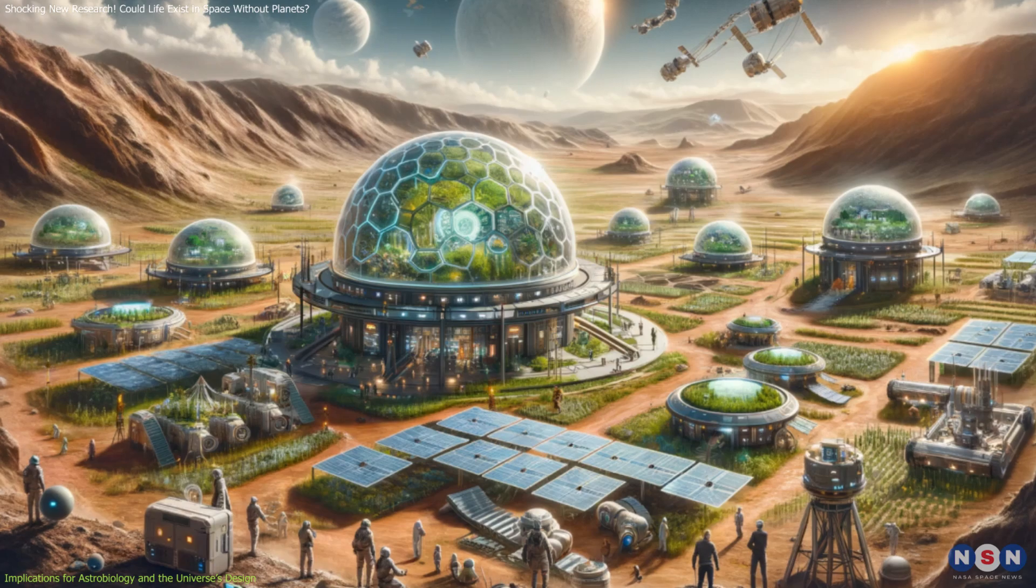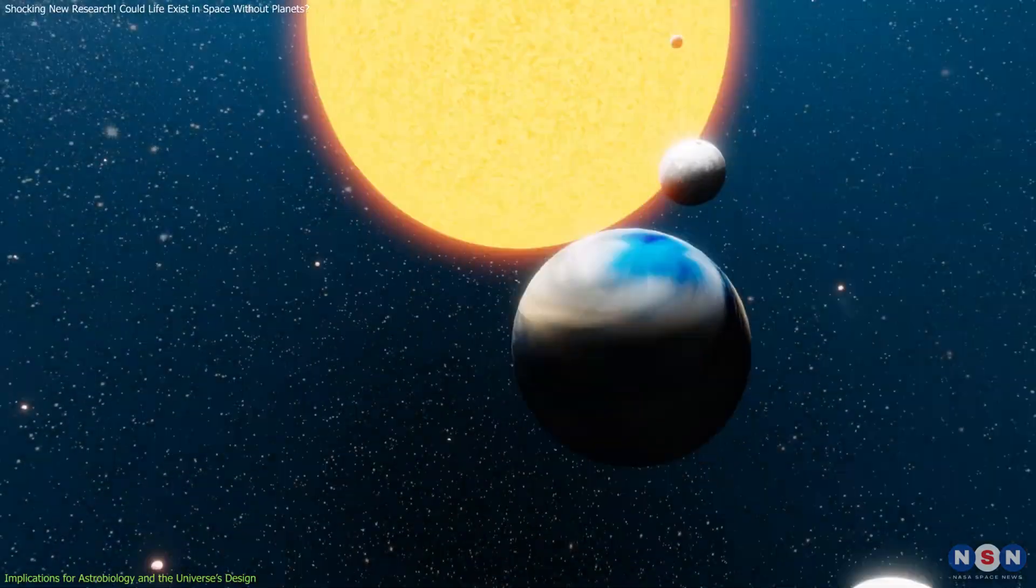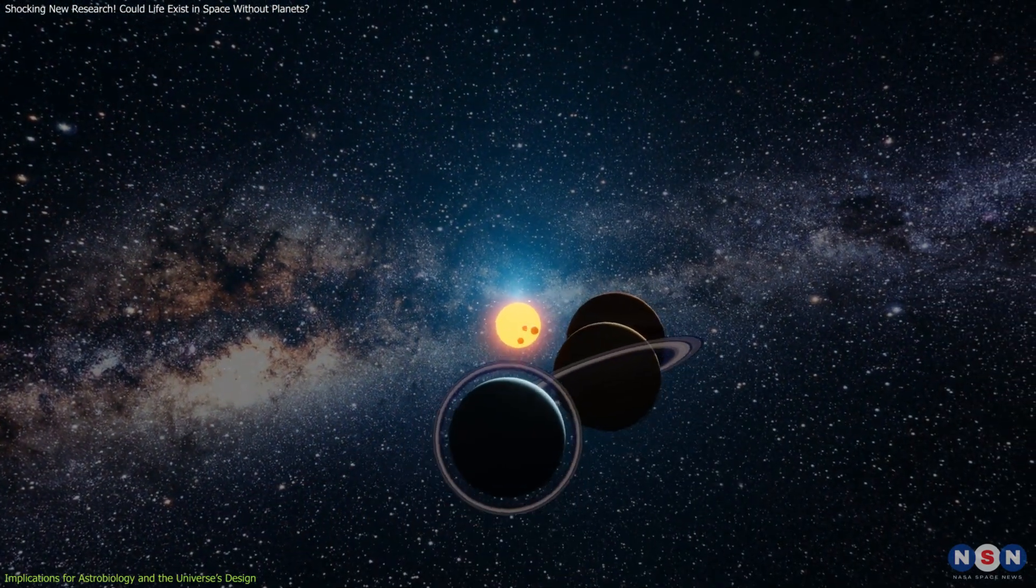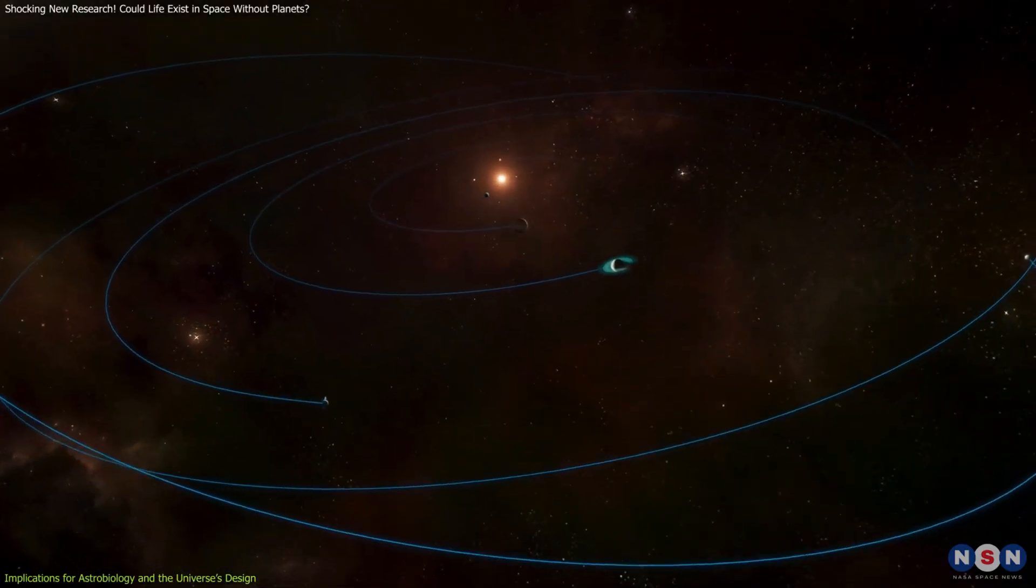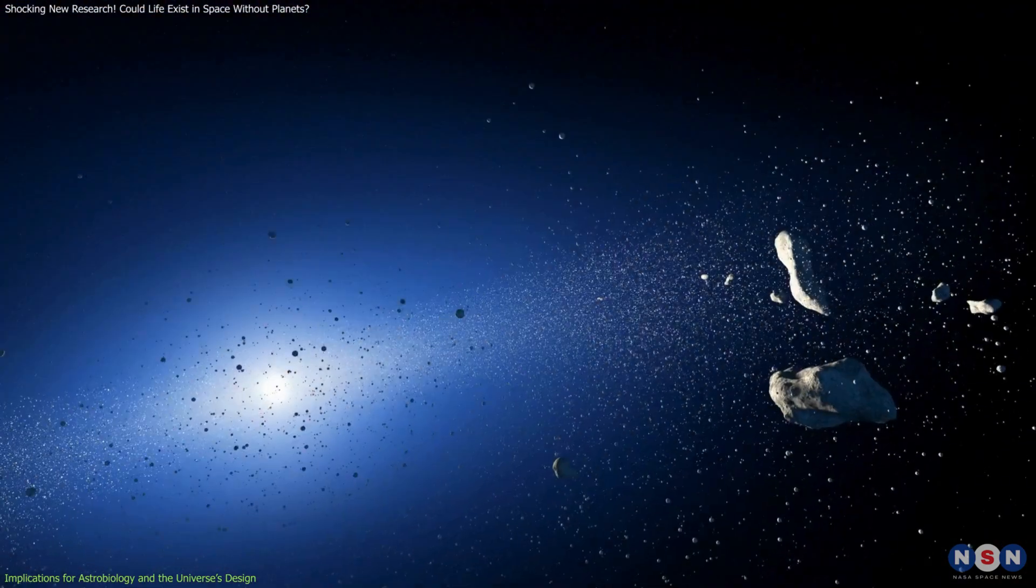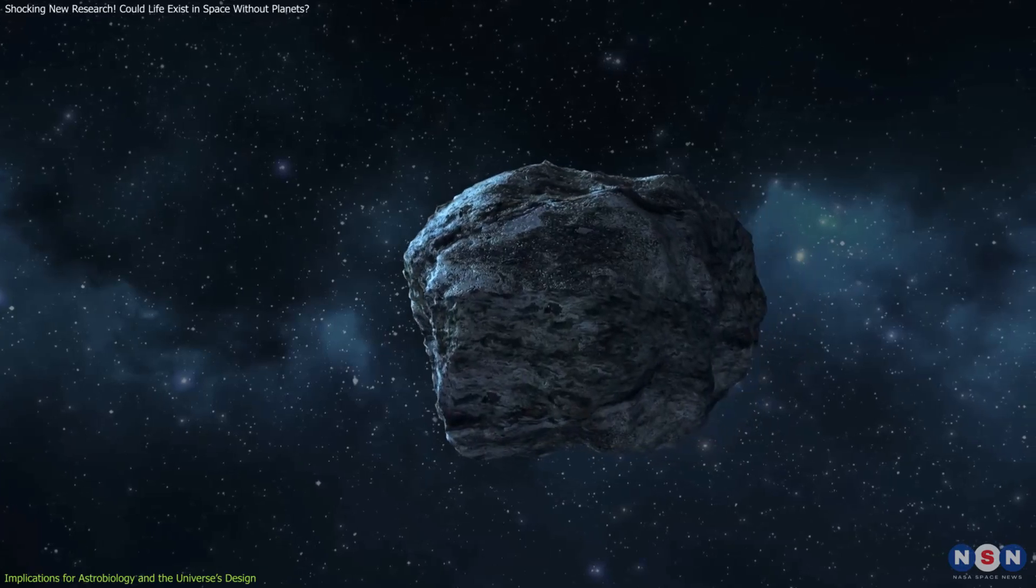and maintaining stable conditions indefinitely would expand humanity's reach across the cosmos. As we search for extraterrestrial life, this paradigm shift invites us to explore regions previously overlooked, such as the Kuiper Belt or the surfaces of asteroids.